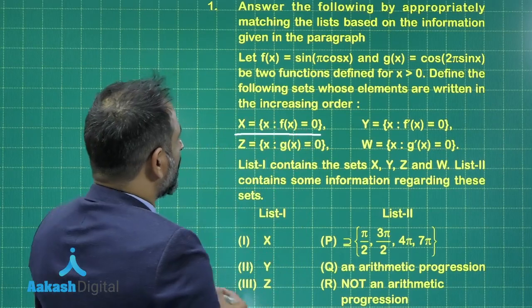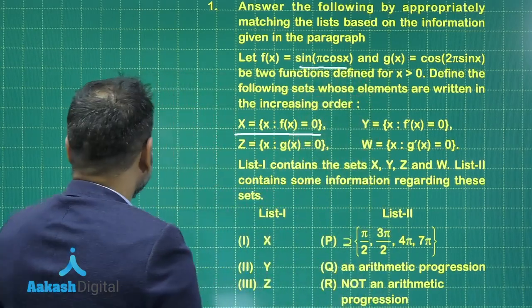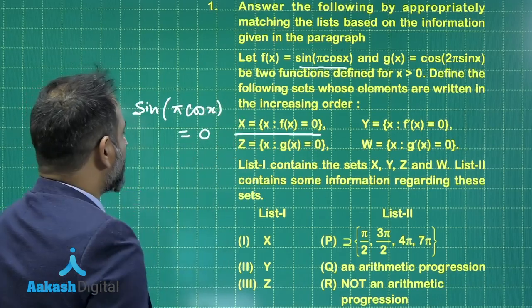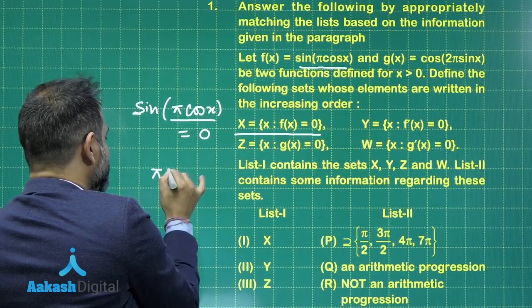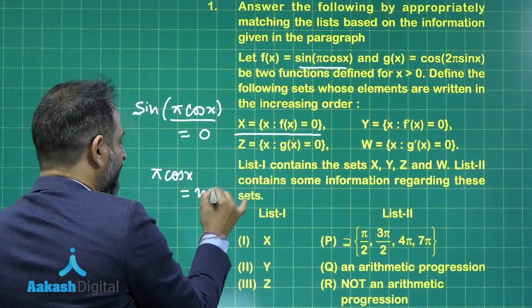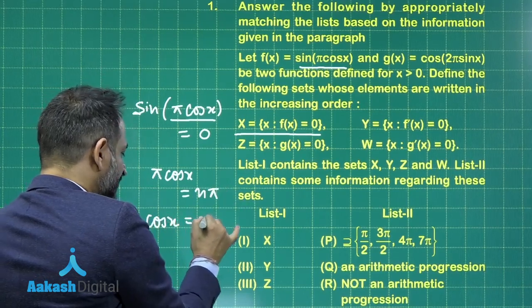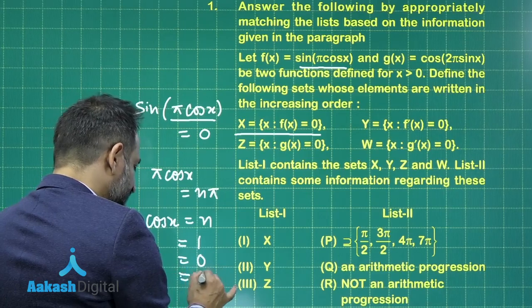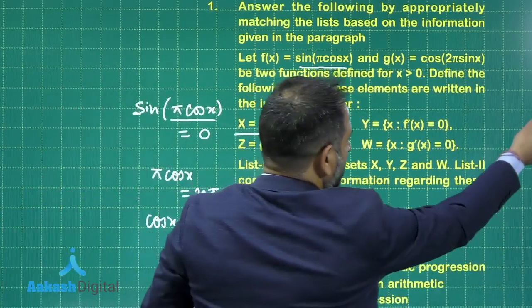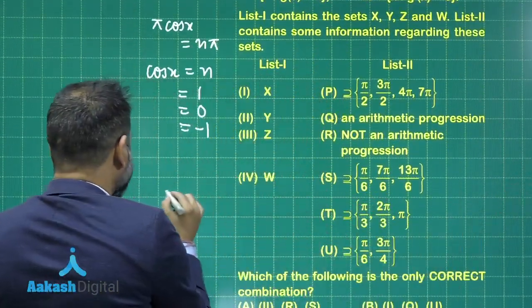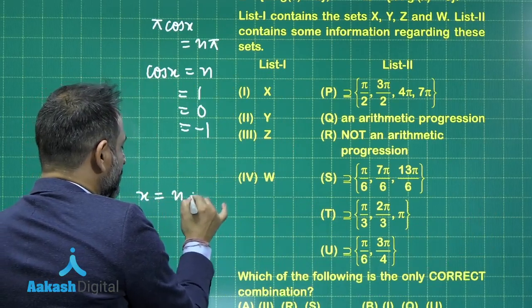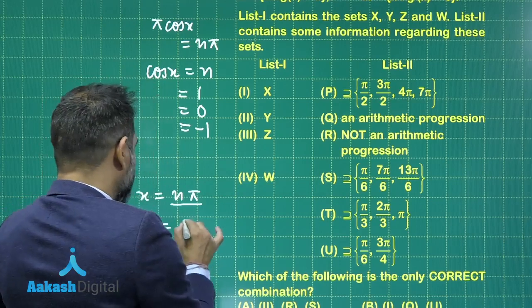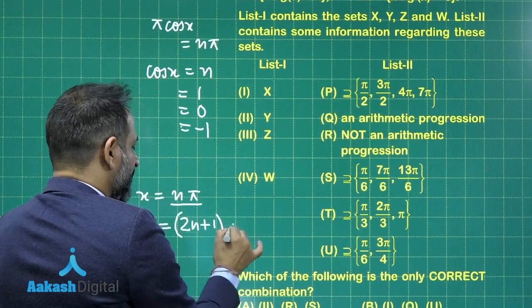It is given that f(x) = 0. Since f(x) = sin(π cos x), we have sin(π cos x) = 0, which means π cos x must be a multiple of nπ. From here, cos x = n. The possible values of n are 1, 0, and −1. When cos x = 1 or −1, x = nπ, and when cos x = 0, x is an odd multiple of π/2, i.e., x = (2n+1)π/2.